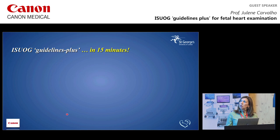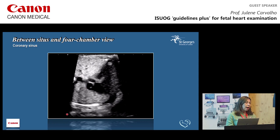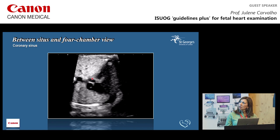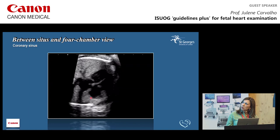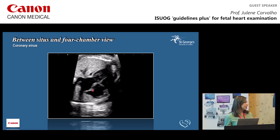Beyond transverse views with color and pulse wave Doppler, there is an important plane between the situs and four-chamber view. By sweeping slowly, you identify the coronary sinus on the back of the left atrium — it can simulate an atrioventricular septal defect. Moving anteriorly brings you to the four-chamber view. This is useful because a dilated coronary sinus indicates a left SVC to coronary sinus or anomalous pulmonary venous return. These are additional normal structures not included in the basic ISUOG screening guidelines.